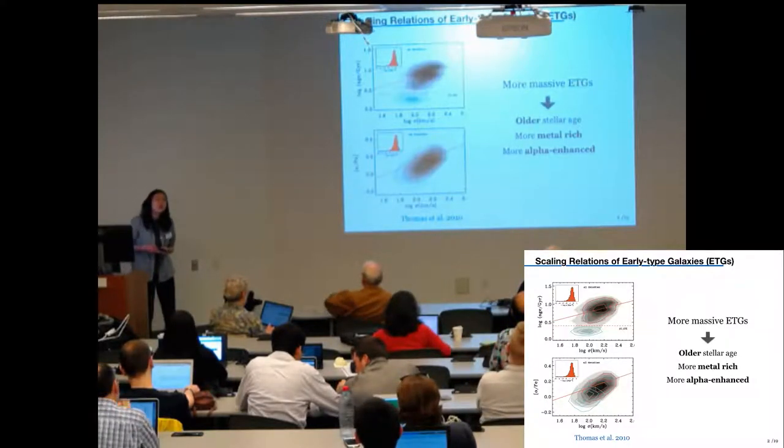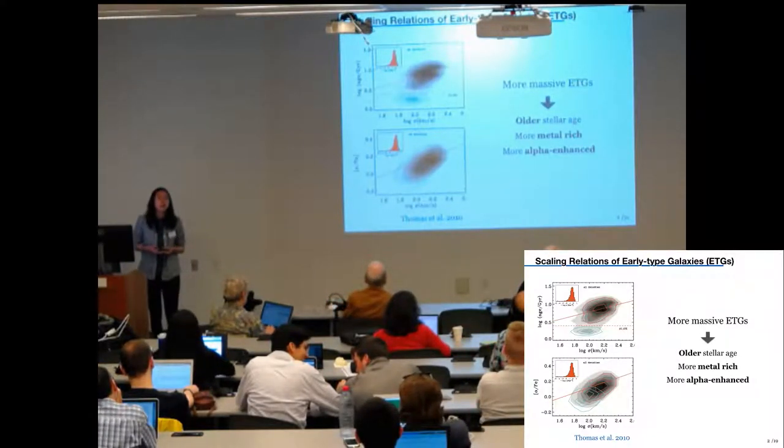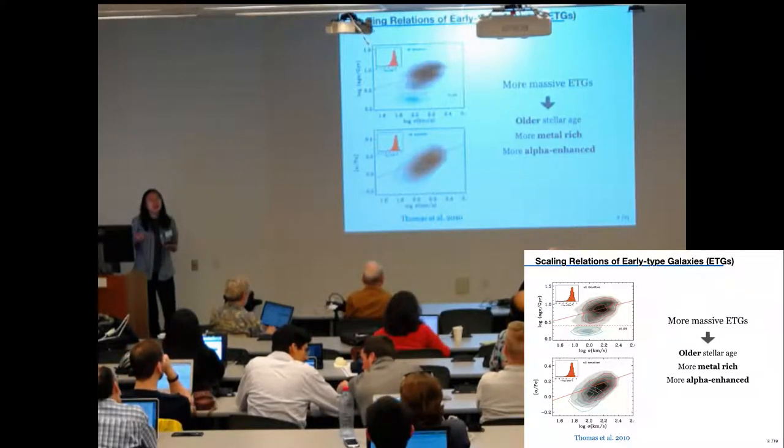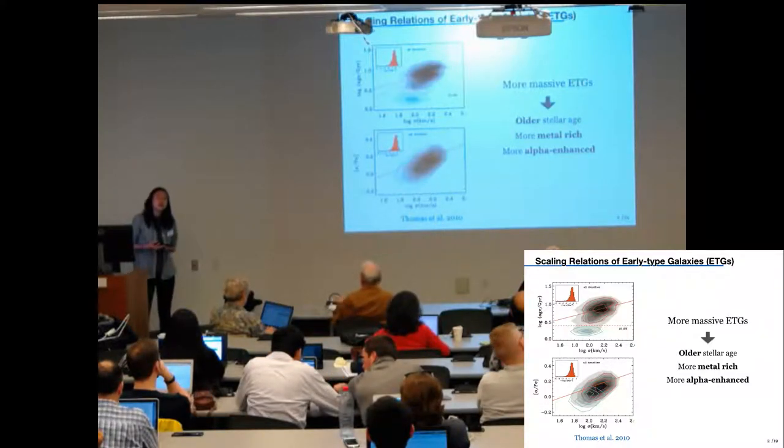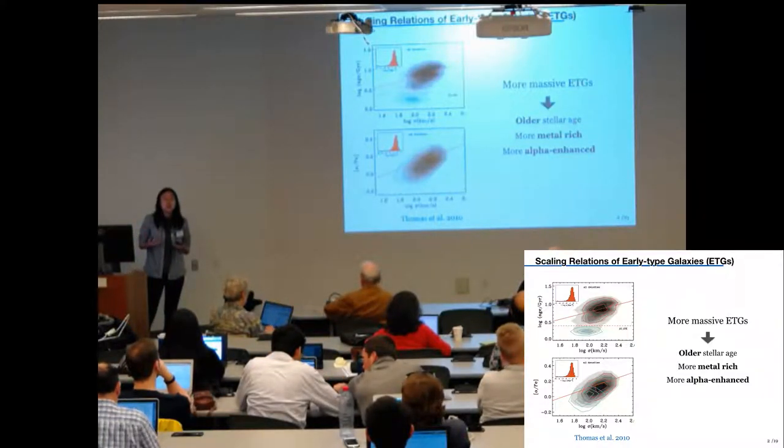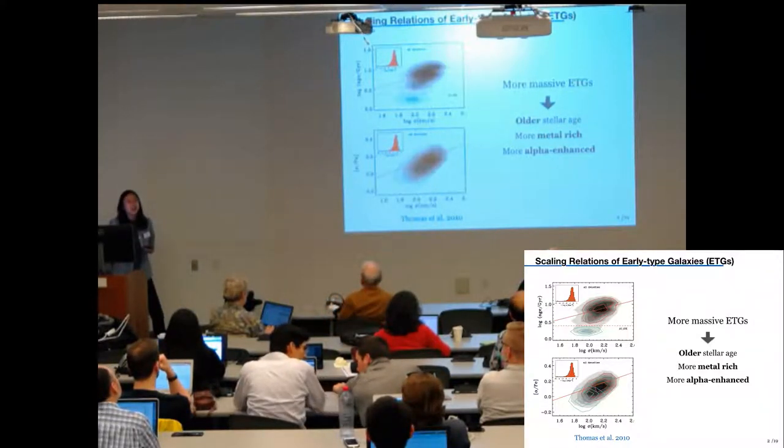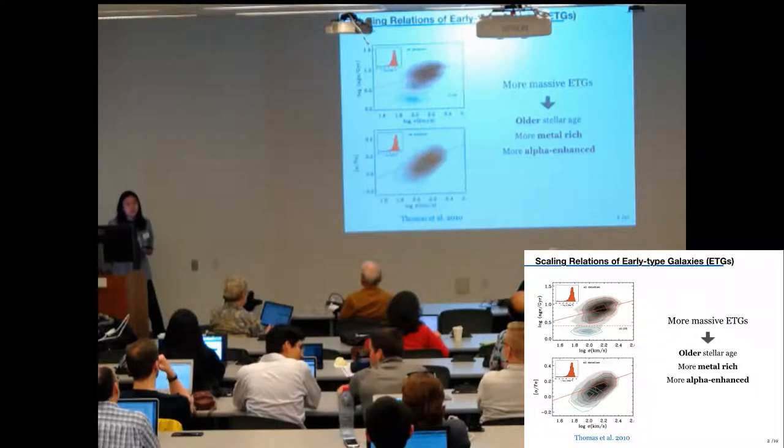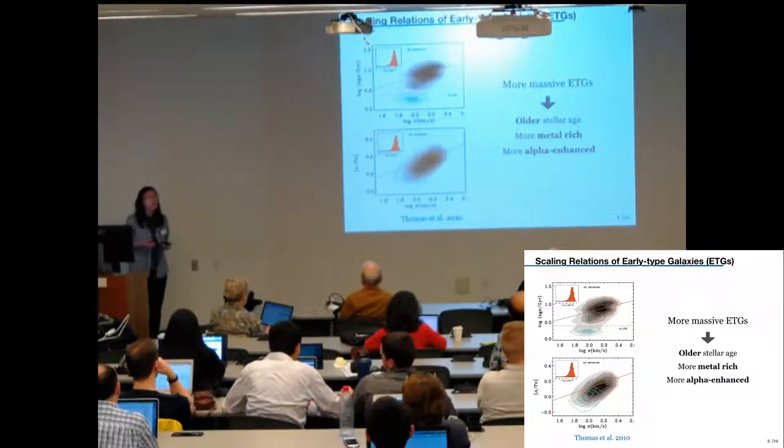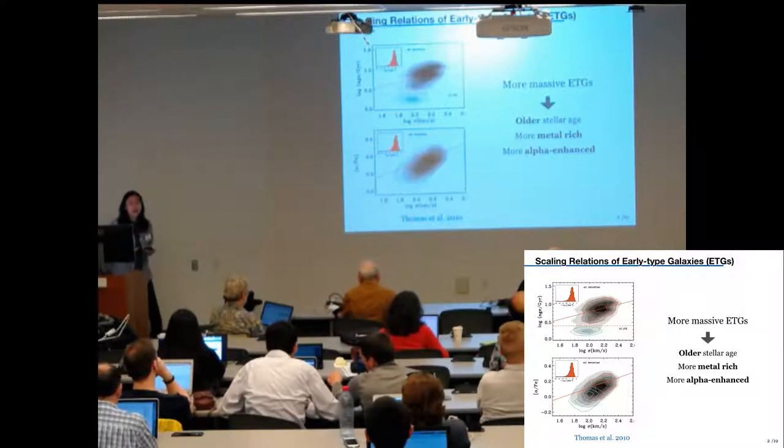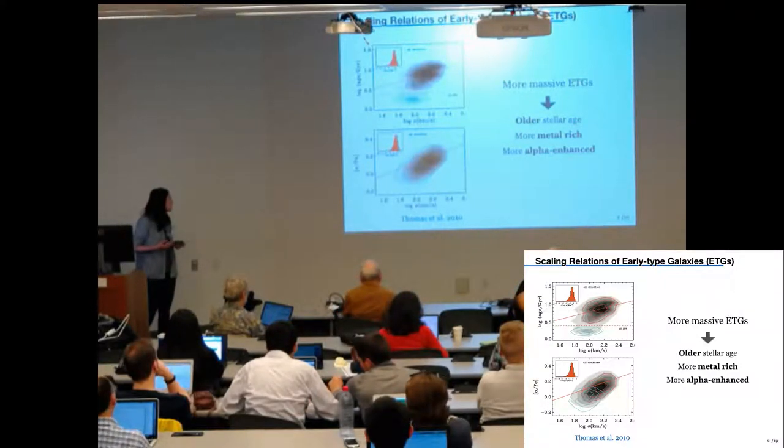There are already many great talks this week showing how massive galaxies grow hierarchically along with their underlying dark matter structures. And for early-type galaxies, recent studies have revealed that they follow scaling relations between their stellar mass or central velocity dispersion and their stellar population properties. The figure here I'm showing a study on a large sample of Sloan early-type galaxies led by Daniel Thomas in 2010.